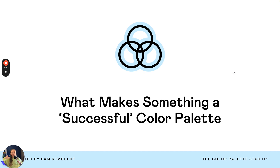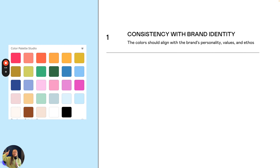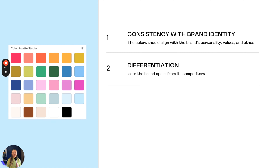What makes a successful color palette? First, it should be consistent with your brand identity — the colors you choose should align with your brand's personality, values, and ethos. They should feel like the brand they represent. Next, focus on differentiation: your palette should set your brand apart from competitors. If you placed your website next to a competitor's and removed all logos and text, you should be able to tell which brand is which just based on the colors alone — that's what you're looking for.